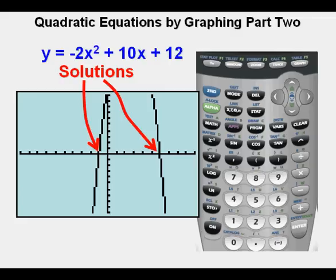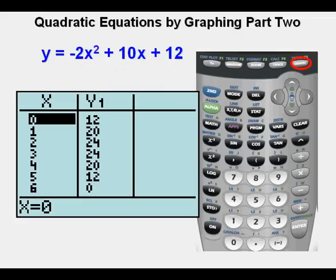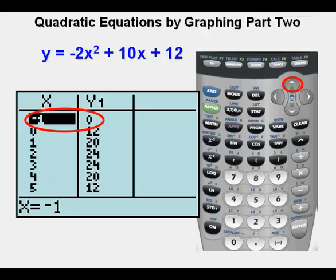We check out the table view by pressing second, then graph. We see one solution at 6 comma 0 at the bottom there. If we arrow up, we see our second solution at x equals negative 1. Joe has confirmed the solutions to the quadratic equation as negative 1 and 6.